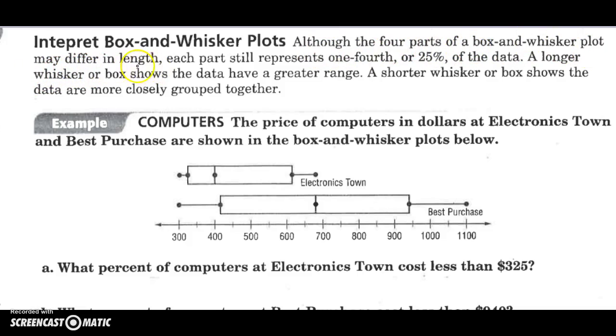So there are four parts of a box and whisker plot, and they may differ in length. Each part still represents one-fourth or 25% of the data.